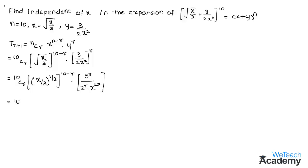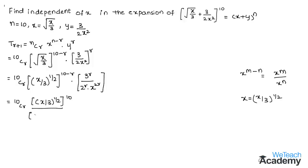We can apply the formula x^(m−n) = x^m / x^n. Comparing, we write (x/3)^(1/2) whole power 10 divided by (x/3)^(1/2) whole power r, multiplied by 3^r divided by 2^r. Here, 1/x^(2r) can be written as x^(−2r).